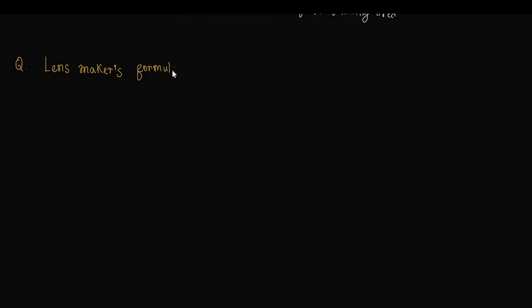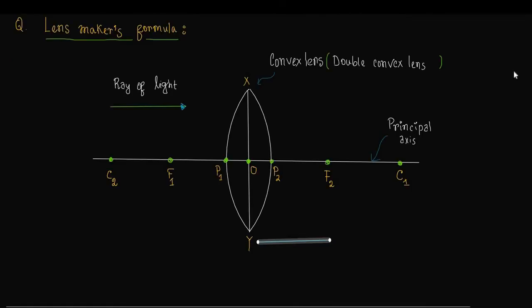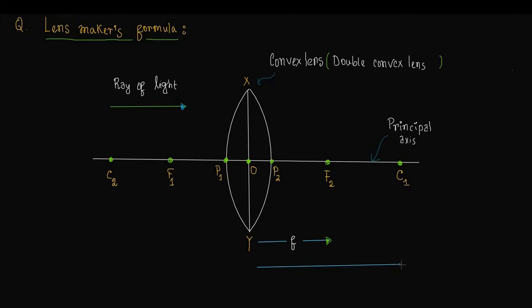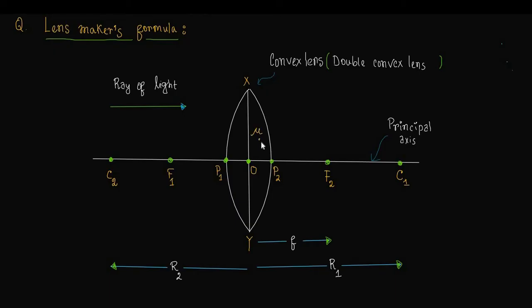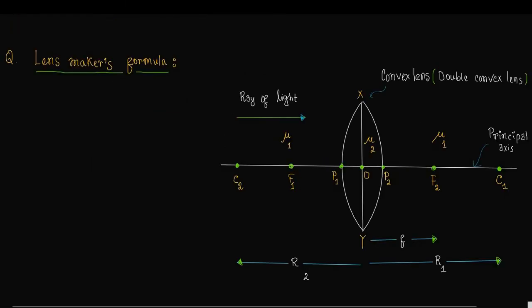Lensmakers Formula. We have to state the Lensmakers Formula. We can denote the focal length of a convex lens as f. R1 is the radius of curvature of the first refracting surface xp1y. Similarly, R2 is the radius of curvature of the second refracting surface. Mu2 is the refractive index of the convex lens, and mu1 is the refractive index of the surrounding medium.